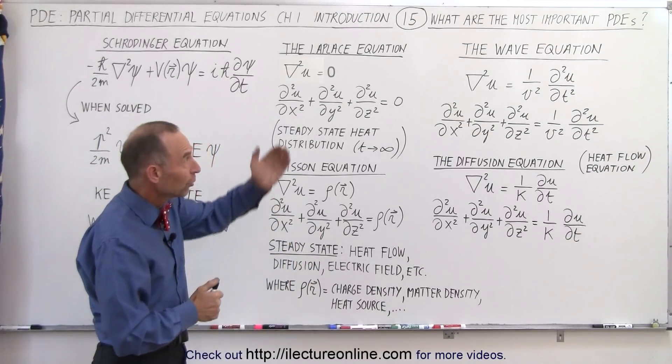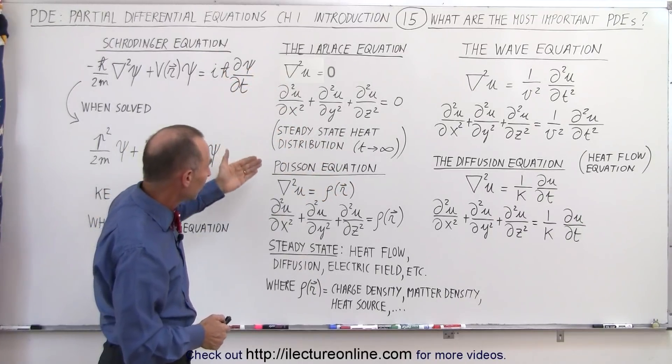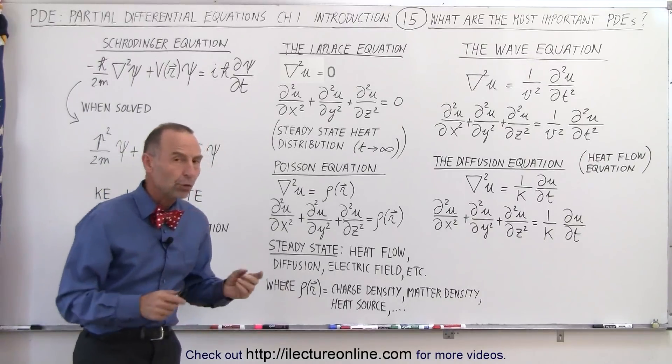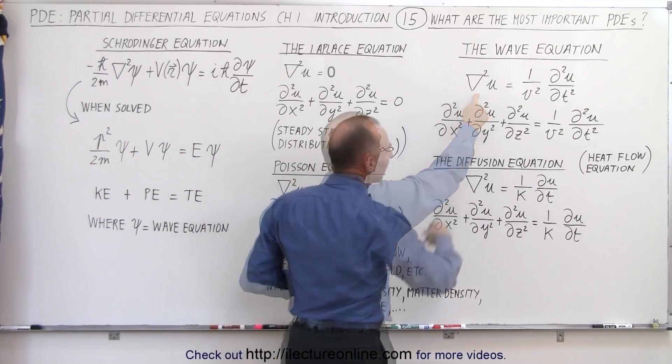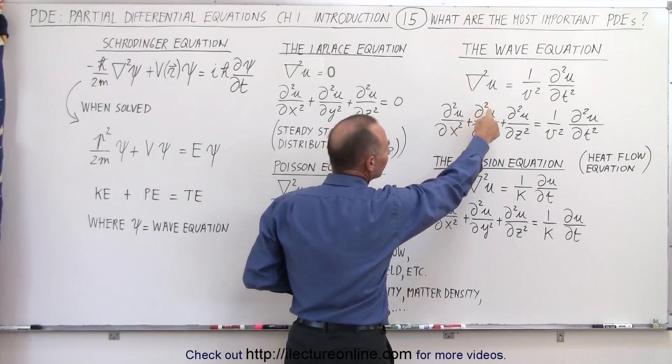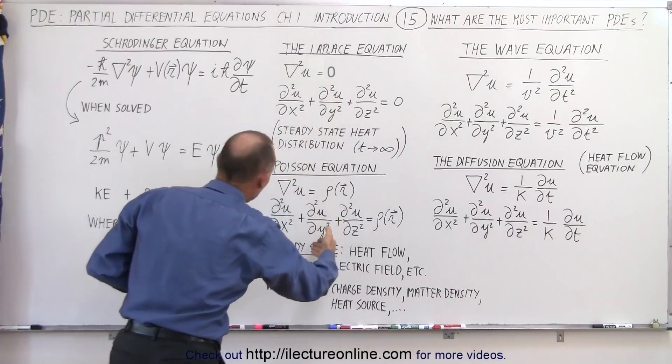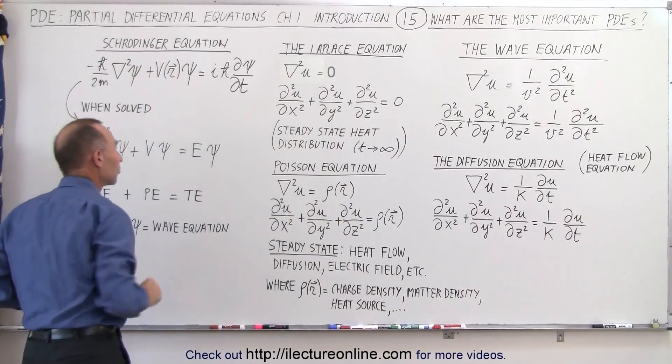And the five are the wave equation, the diffusion equation, the Laplace equation, the Poisson equation, and the Schrödinger equation. Now notice all of them involve what we call the Laplacian - the second partial derivative of the function with respect to x, y, and z. You can see that in the first four equations as well as in the Schrödinger equation. This is also the Laplacian here. So that's involved in all five equations. But what are the five equations used for?